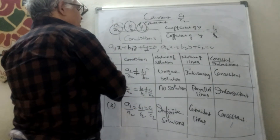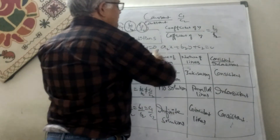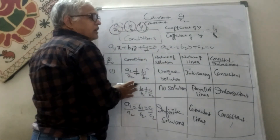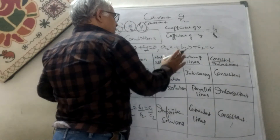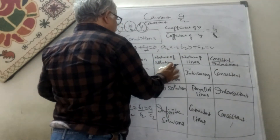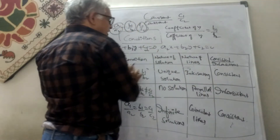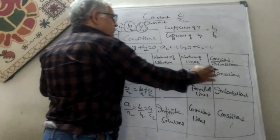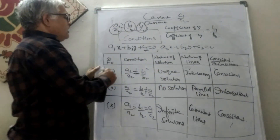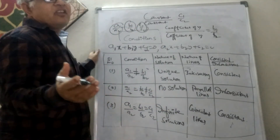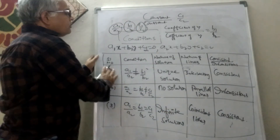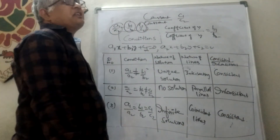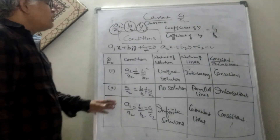Sometimes instead of giving the condition and asking you to explore, they will state the nature of lines and ask for the condition, or give the nature of solution and ask for the condition, or ask about consistency and the nature of solution. Any of these can be the given data or the required result, so students should memorize this particular table.